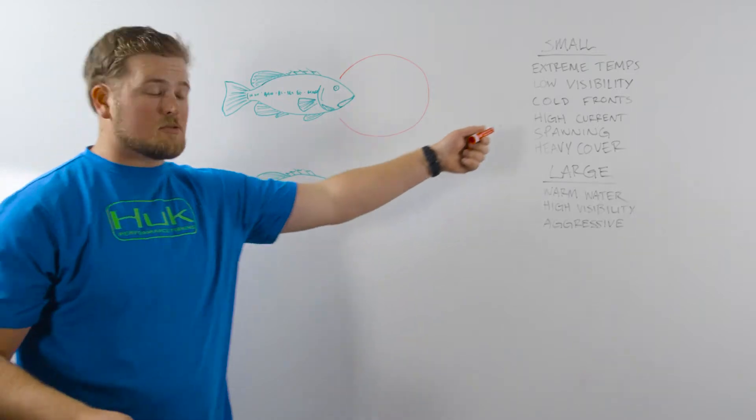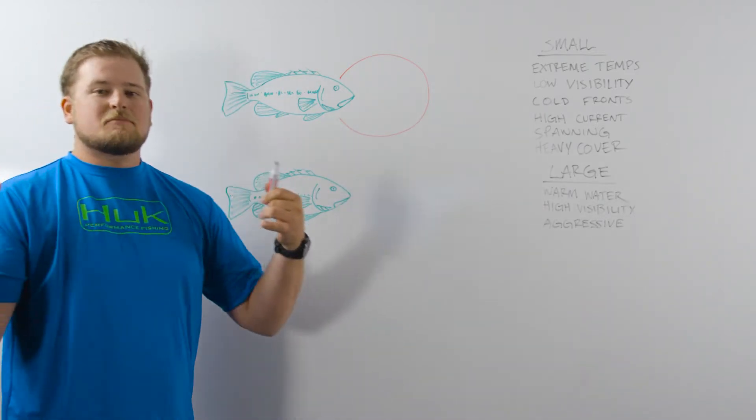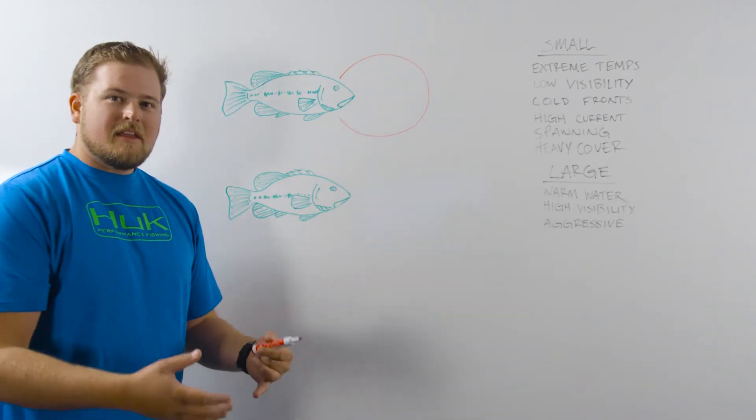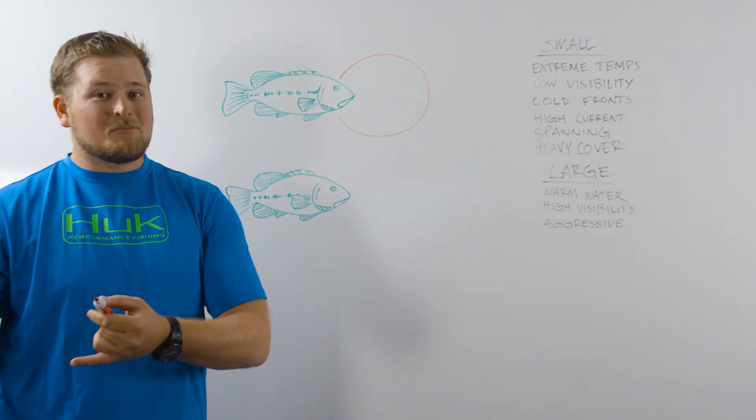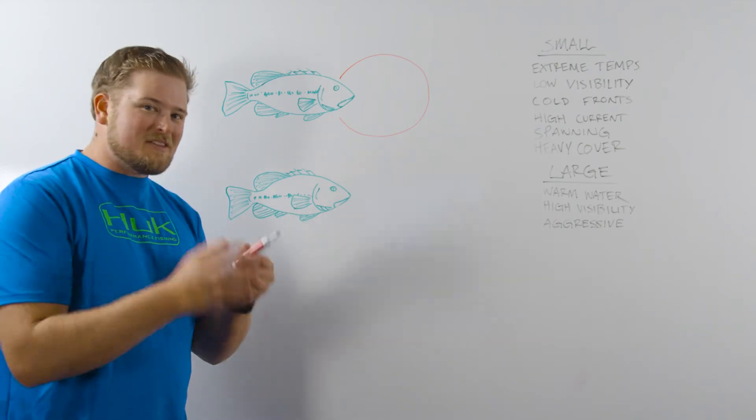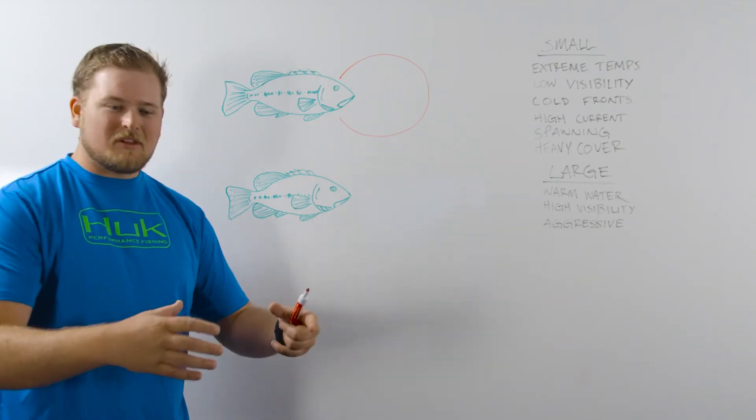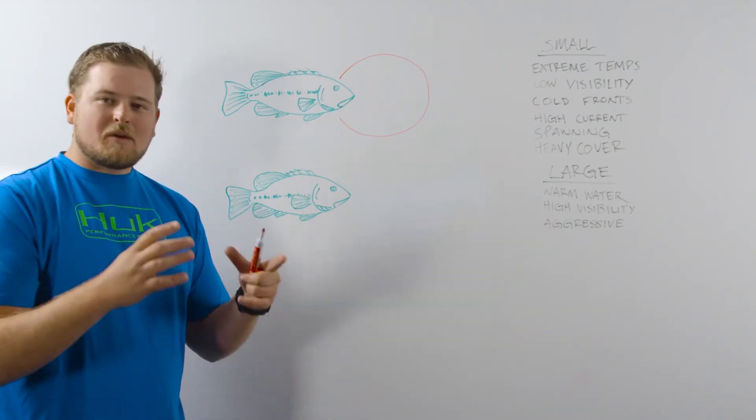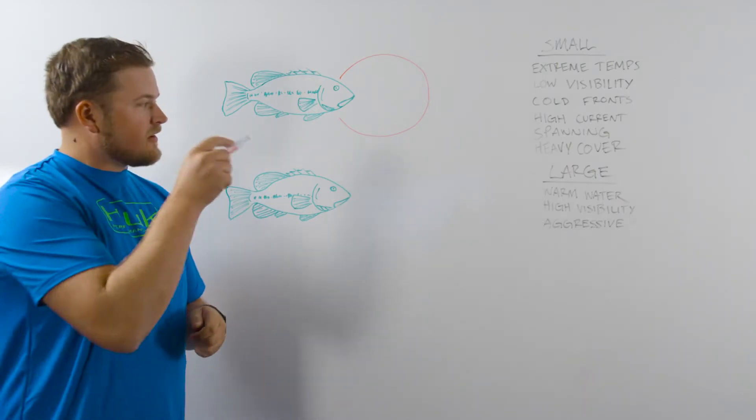And then of course, spawning is a really good example because when they fan out their bed, they're sitting on the bed. If you cast outside the bed, their bait doesn't make it right into the center of it, they don't care. But if you cast right in the center of it, that's that strike zone. The bed is a visual representation of that strike zone, and they're going to attack it.